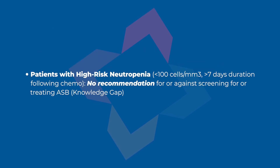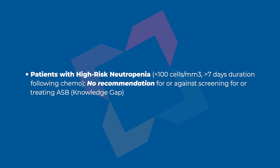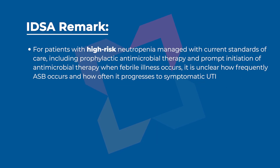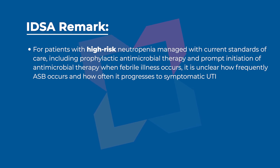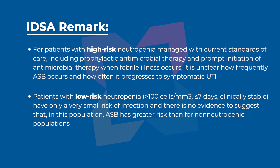Our next recommendation is for patients who are at high risk for neutropenia, which is cell counts of less than 100 for a duration of greater than seven days following chemotherapy. For this patient population, the IDSA does not make a recommendation for or against the treating or screening of ASBs due to a knowledge gap. Patients with high risk for neutropenia should be managed with prophylactic antimicrobial therapy and prompt initiation of antimicrobial therapy when a febrile illness occurs. It is unclear how frequently ASB occurs and how often it progresses to symptomatic infection. Patients with low risk for neutropenia have only a very small risk of infection, and there is no evidence to suggest that ASB has greater risk than for non-neutropenic populations.